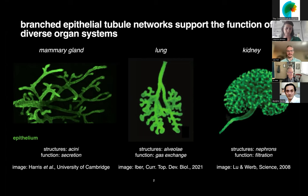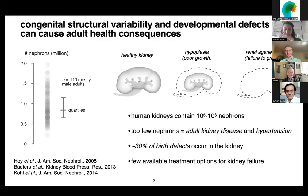In the mammary glands these would be acini, which function in secretion. In the lung, these are alveoli, which function in gas exchange. And what I'll be talking about today — in the kidney, these are nephrons, which function in filtration. A secondary goal is to build enough of these structures to accommodate the physiological demands of adult function. Certainly in the kidney, the number of nephrons is very important to health.